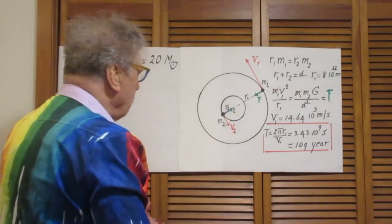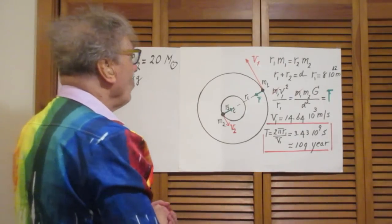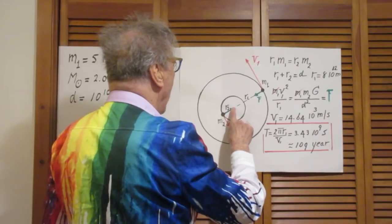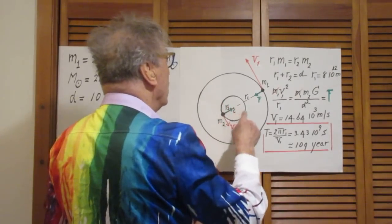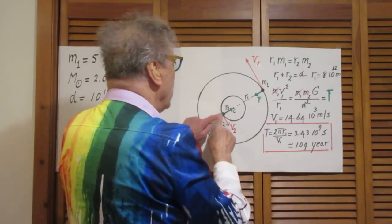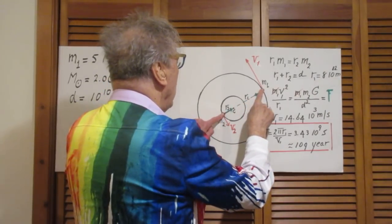So here you see the system. Here is m1, here is m2, and here is the center of mass. They both go around the center of mass. And when this one is here, the other one is there.